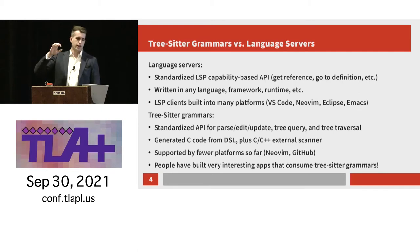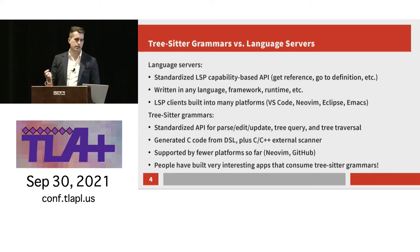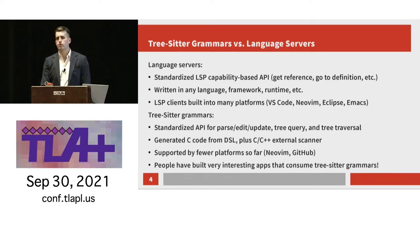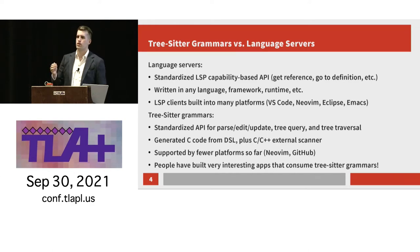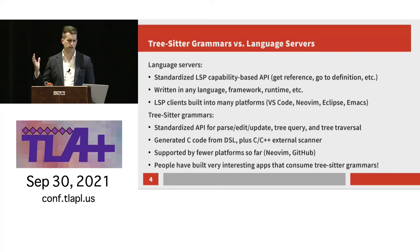Compare this with TreeSitter grammars. The API for TreeSitter grammars is a lot lower level — it's basically just parse, update, and query the tree. It's generated C code, so there aren't really any runtime dependencies. It's supported by fewer platforms so far — basically just NeoVim, which is a fork of Vim where you can write plugins in Lua. NeoVim includes support for language servers and TreeSitter grammars right out of the box, which is interesting. Also GitHub supports it — TreeSitter is actually developed by GitHub and they use it for highlighting.